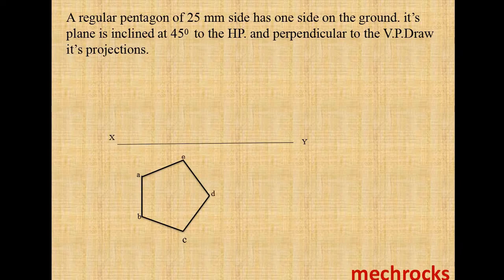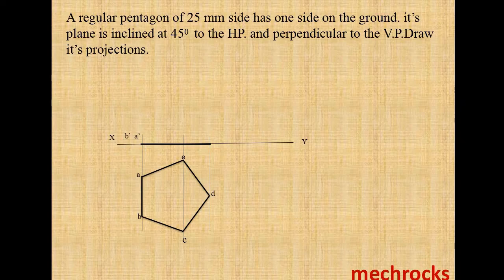You draw the five sides and give the names A, B, C, D. This is our top view. Then you draw the front view by drawing projection lines from A, B, C, D. Now draw the front view on the XY line only, because one side is on the horizontal plane. That's why this is A dash, B dash, C dash, and D dash. This is the required front view.